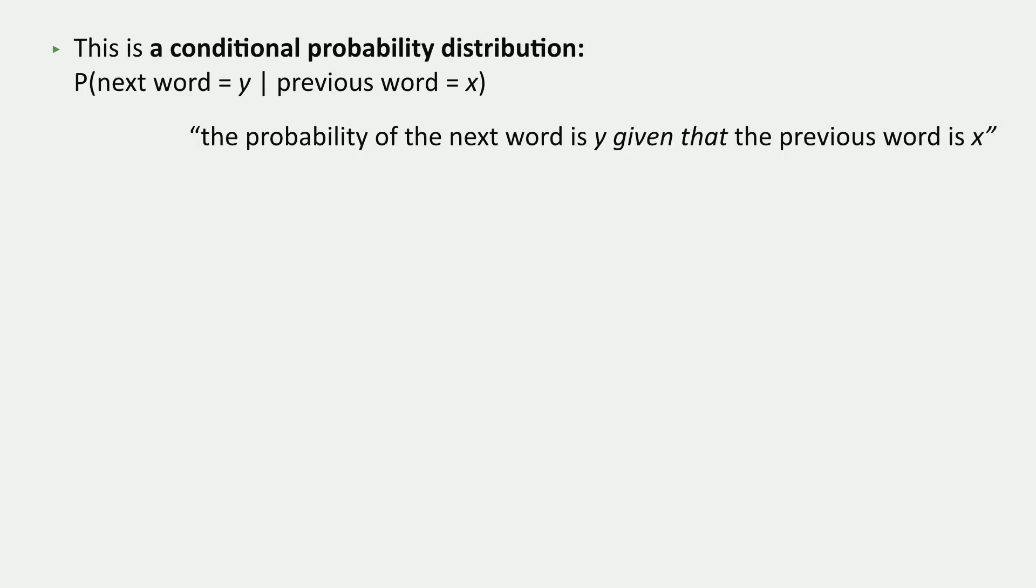So we're going to write things that look like this. P, or probability, of next word equals y given previous word equals x. And what that reads as is it defines a number, which is the probability that the next word is y, assuming that we just saw x in the sentence.